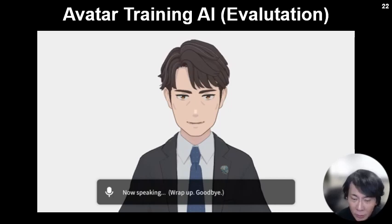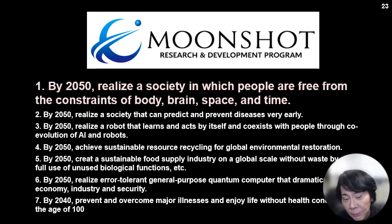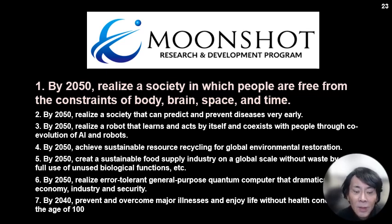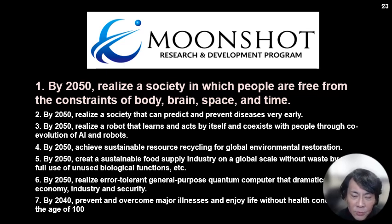Any human can work by using avatars. To realize the human-avatar symbiotic society, we are running a very big project called the Moonshot. The Moonshot has seven goals we have to achieve by 2050 in Japan. The first goal is to realize avatars. By 2050, we want to realize a society in which people are free from the constraints of body, brain, space, and time.